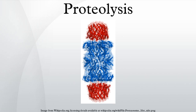Different proteins are degraded at different rates. Abnormal proteins are quickly degraded, whereas the rate of degradation of normal proteins may vary widely depending on their functions. Enzymes at important metabolic control points may be degraded much faster than those enzymes whose activity is largely constant under all physiological conditions. One of the most rapidly degraded proteins is ornithine decarboxylase, which has a half-life of 11 minutes. In contrast, other proteins like actin and myosin have a half-life of a month or more, while hemoglobin lasts for the entire lifetime of the erythrocyte.